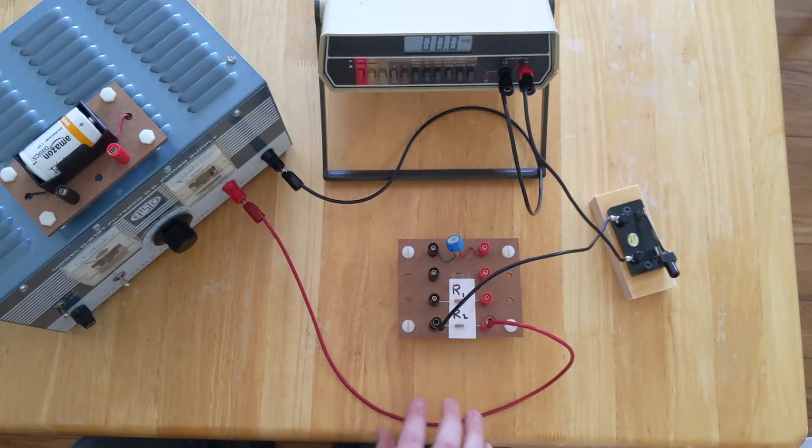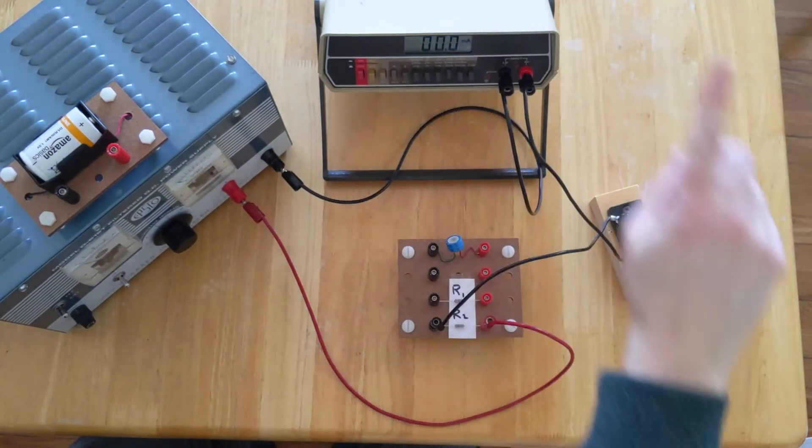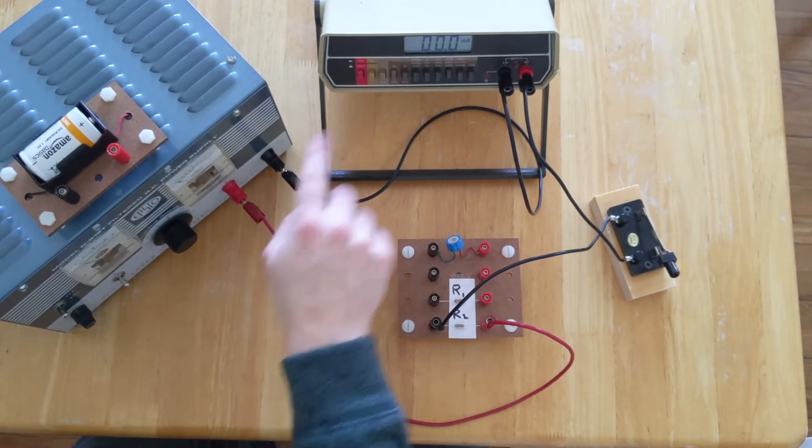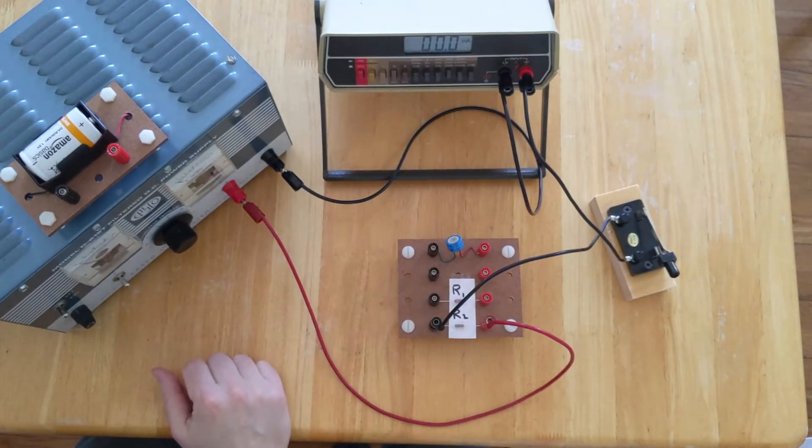Hi everyone. You might recognize this circuit from a previous video. We had a power supply pumping electrons through an ammeter, through a switch, through a resistor, and back into the power supply. Now, this was a series circuit because all of these different elements were connected tip to tail with one another to create one continuous loop for the electrons to flow through.